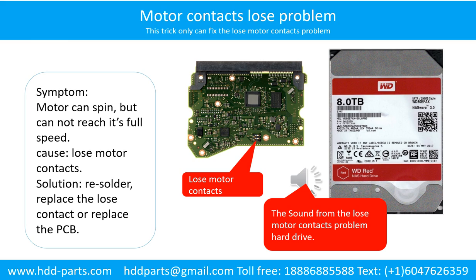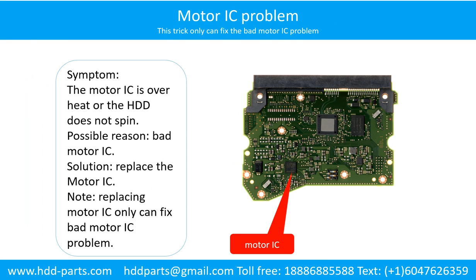Motor contact loose problem. Symptom: the motor can spin but cannot reach its full speed. Cause: loose motor contacts. Solution: resolder or replace the loose contacts, or replace the PCB. Here is the sound from a hard drive with the loose motor contact problem.